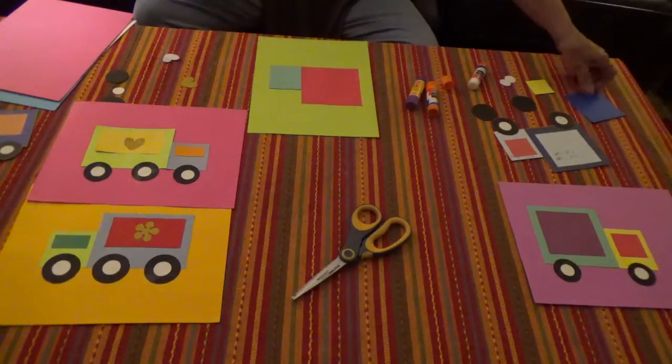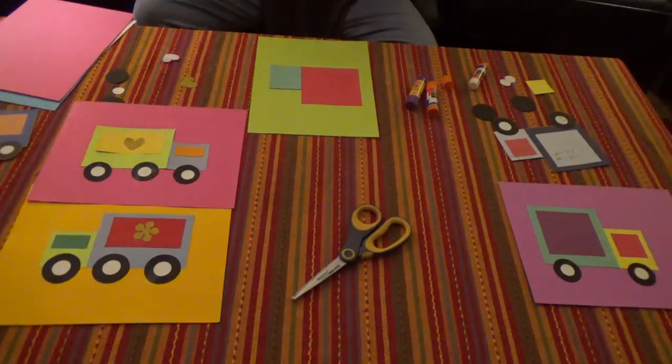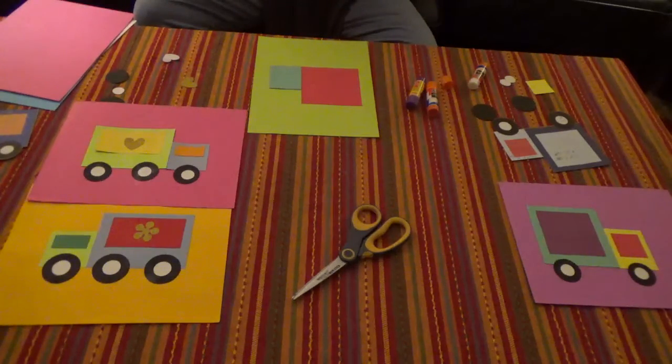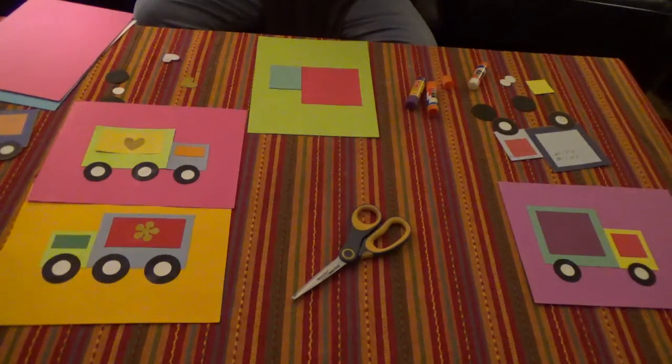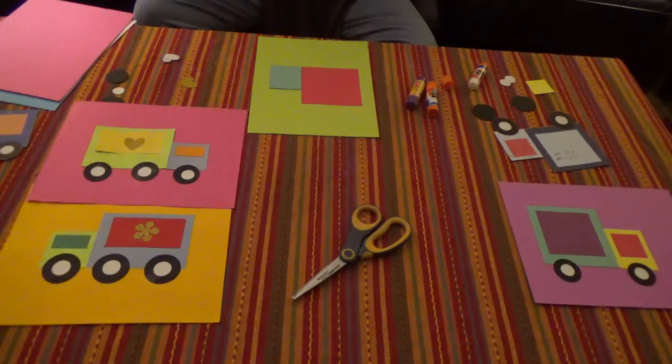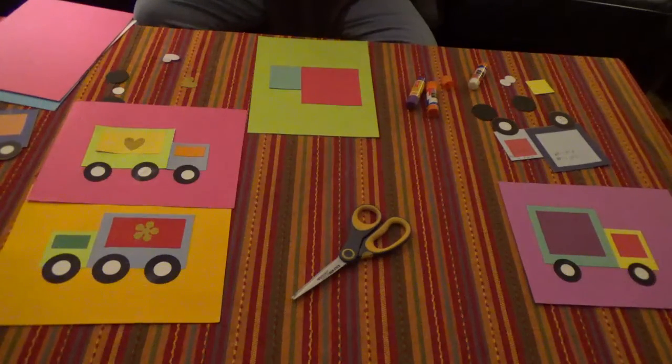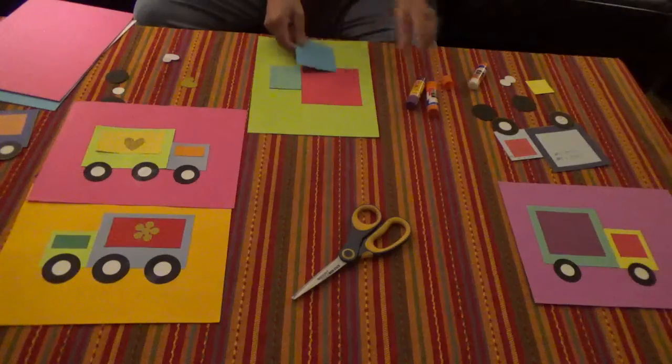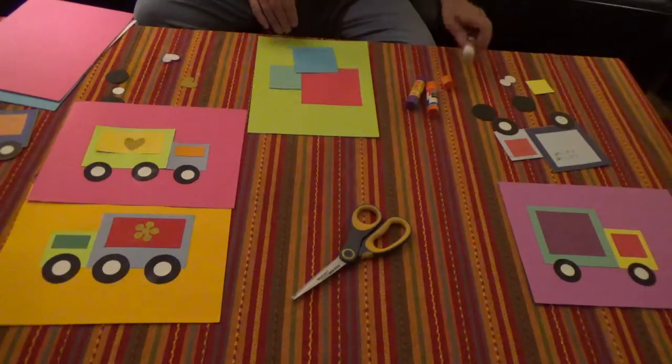And then we are going to take the next square. And these are squares - squares, all four sides are the same. Rectangles, they are the same on two sides, but they are a different size than the other two sides. But the other two sides are the same as each other. So that is the difference between a square and a rectangle.